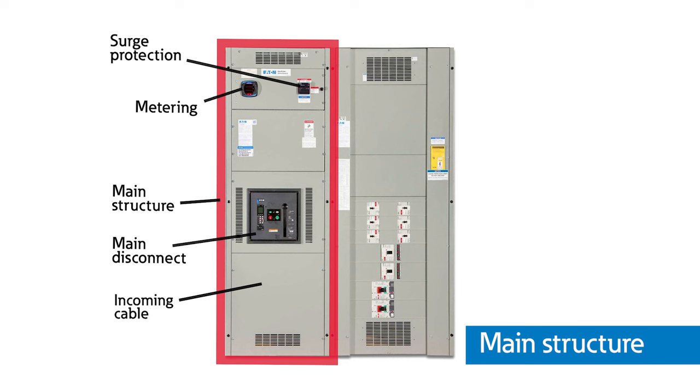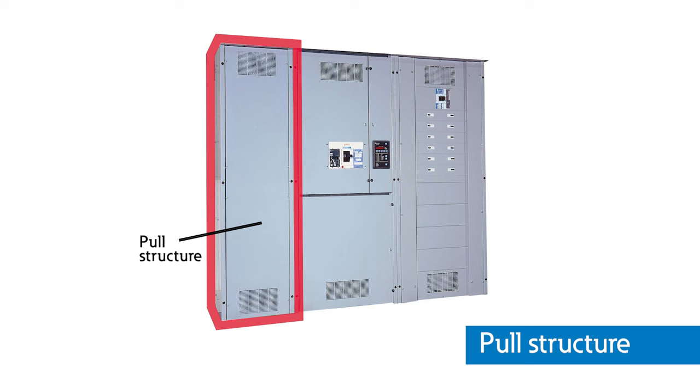A switchboard can consist of a single vertical structure or multiple structures depending on the number and sizes of the loads being powered. A main structure will contain the main disconnects or main lugs and will often contain utility and/or customer metering equipment and surge protection. Cabling can enter directly into the main structure or through a dedicated pull structure, which is a blank enclosure containing empty space through which cabling can be pulled, commonly used in service entrance switchboards.